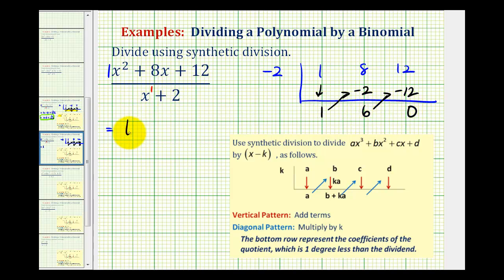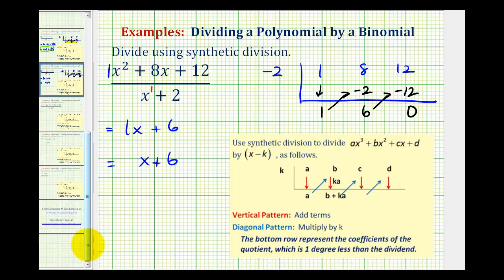So we have one x plus six, or just x plus six. And again, because the remainder is zero here, we know that x plus two would be a factor of x squared plus eight x plus 12. We'll take a look at a few more examples of synthetic division in the next few videos.